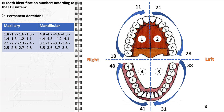Tooth identification is methodically organized using the World Dental Federation numbering system, which is precise and globally recognized. This system employs a two-digit number for each tooth, facilitating clear communication among dental professionals. The mouth is divided into four quadrants, indicated by the first digit. For permanent dentition, quadrant one is the maxillary right, two the maxillary left, three the mandibular left, and four the mandibular right. Each quadrant in an adult contains eight teeth, numbered sequentially from the midline starting with the central incisor, resulting in tooth numbers 11–18, 21–28, 31–38, and 41–48.